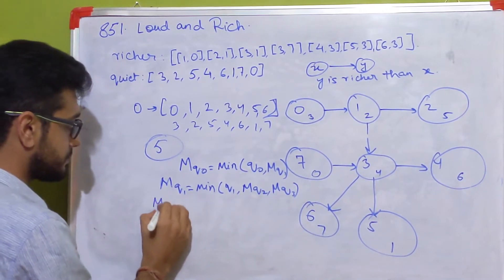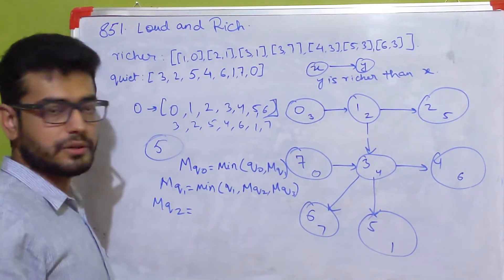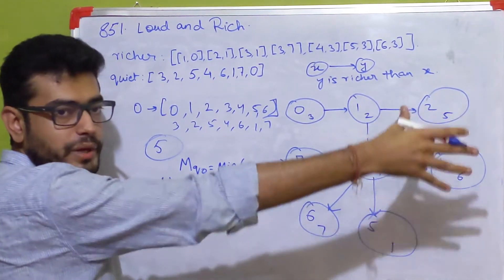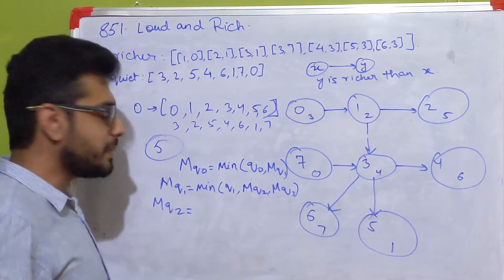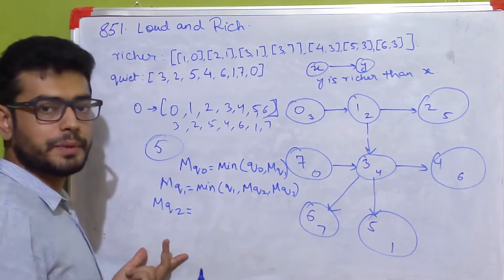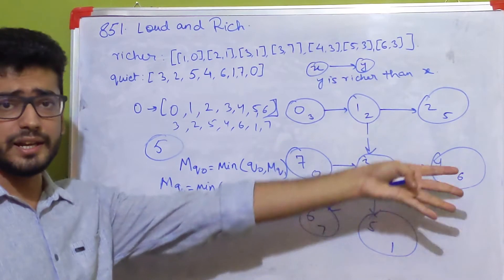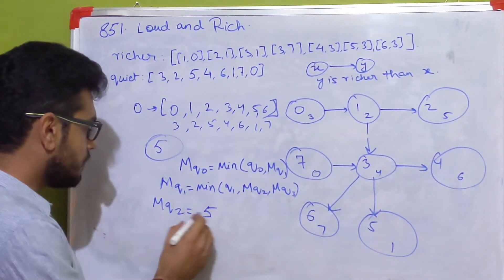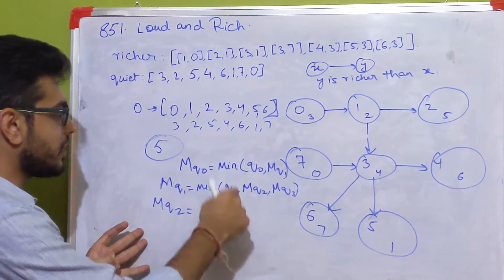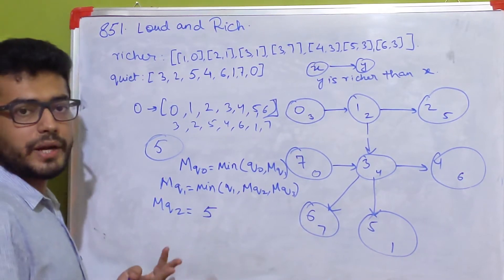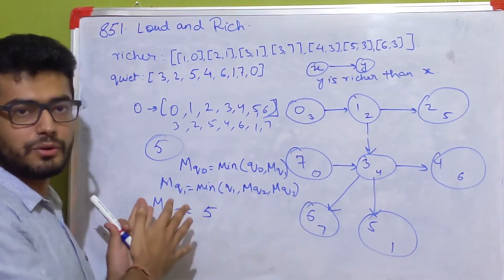Since 2 is not directly connected to any other nodes — there is no outgoing edge from 2 — we don't know any person richer than 2. So the minimum quietness value of 2 is the quietness value of itself, which is 5. Node 2 becomes a leaf node of this graph. Once we calculate all these values and plug them into the equations, we can get the minimum quietness value for all nodes and understand how to put this into code.